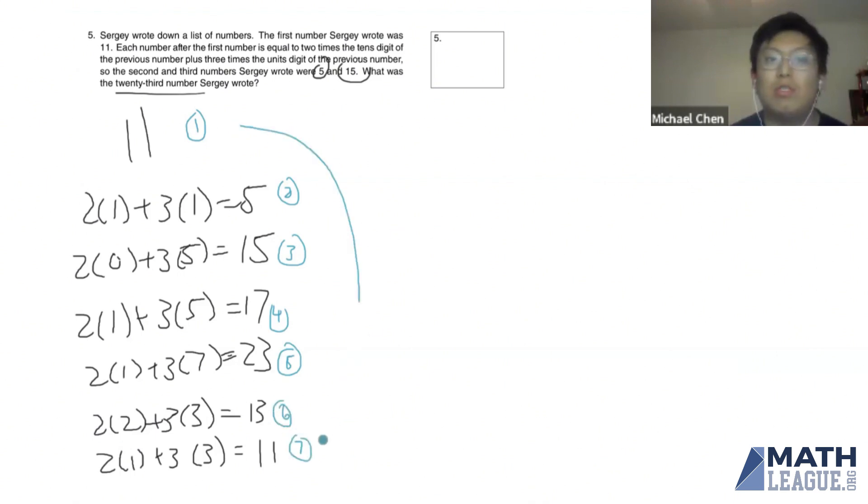So from the first to the seventh number, that's the same number. So every six terms, seven minus one, it repeats. So that means that the first number is equal to the seventh number, is equal to the 13th number, is equal to the 19th number. Now, that means that we know the 19th number is equal to 11.